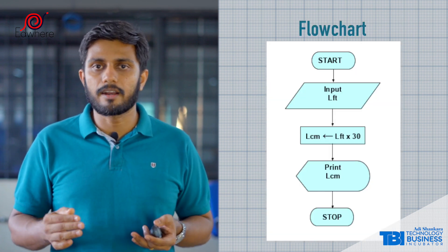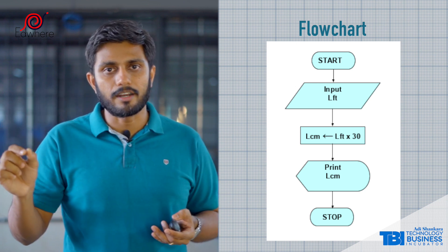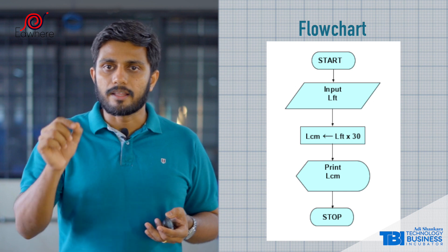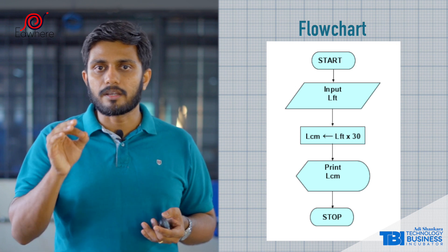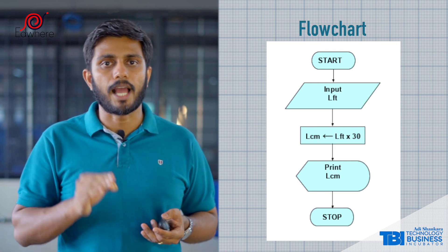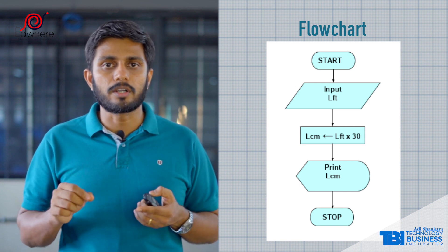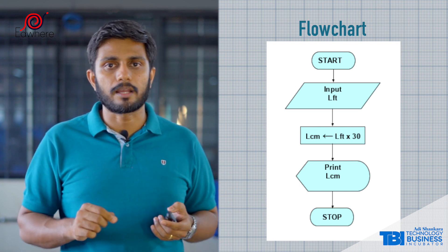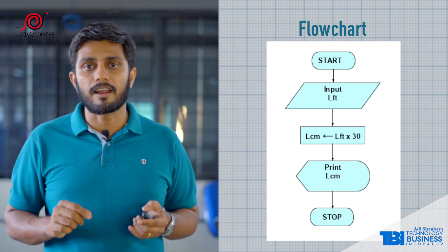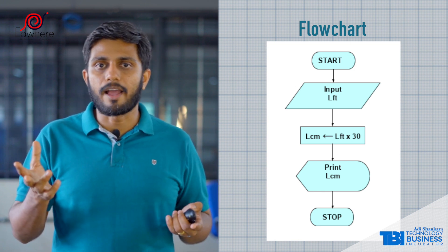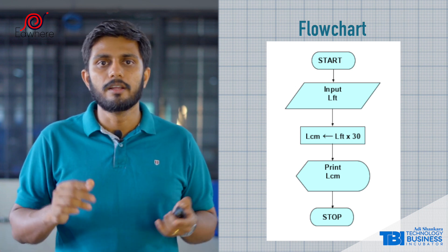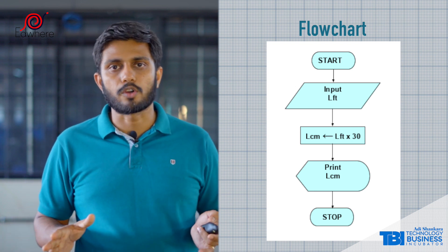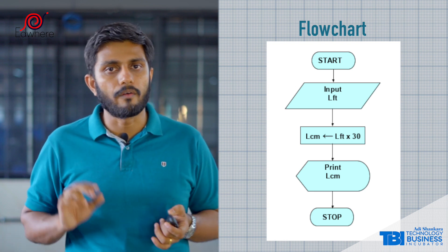If we look at a flowchart, we can use the same symbols. In the beginning, we use the corresponding symbol for the length in feet input. We will perform the calculation and store the result — we will use a rectangle symbol for that. We will print the value using the oval symbol.